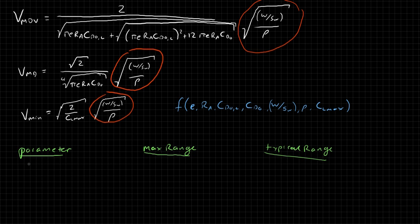We'll start with Oswald's efficiency factor, e. Oswald's efficiency factor is a parameter that in theory could range from 0 to 1, but on aircraft the largest range that we really see is something between like 0.7 and 0.95. The typical range that we see on aircraft is even smaller than that. Normally, Oswald's efficiency factor hovers around 0.8 for subsonic aircraft.